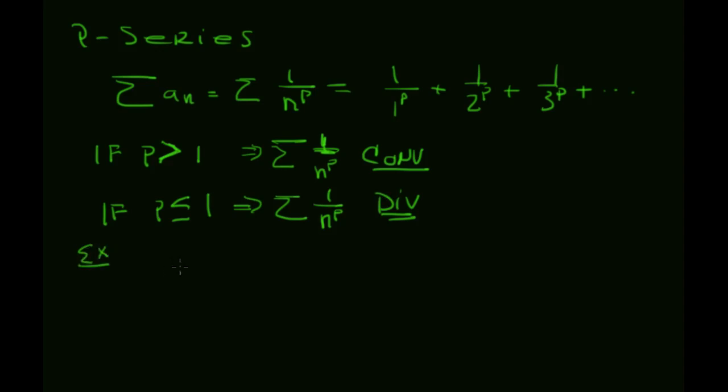So let's give a couple of quick examples here. If I have the sum from 1 over n to the 3, so this is like 1 over 1 to the 3, plus 1 over 2 to the 3, plus 1 over 3 to the 3, and it keeps going. Because p is greater than 1, I get convergence with this series.